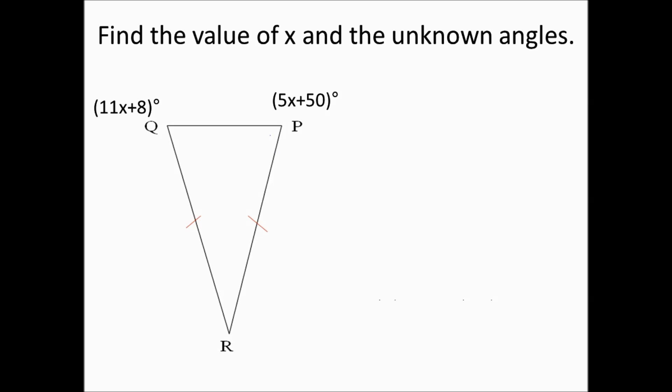Here's another example of the base angles theorem. Two sides of the triangle are congruent, therefore the angles opposite those sides are also congruent. The measurement of angle Q is represented by the expression 11X plus 8, and the measurement of angle P is represented by 5X plus 50. Therefore, we set 11X plus 8 equal to 5X plus 50, because those two base angles are equal to each other.